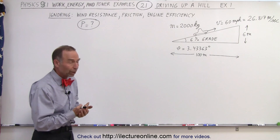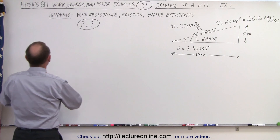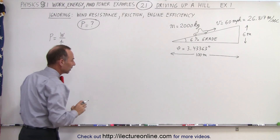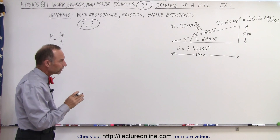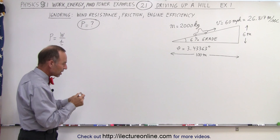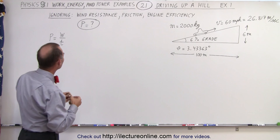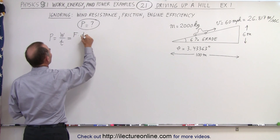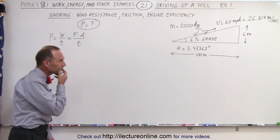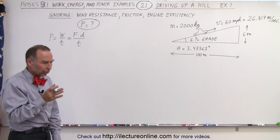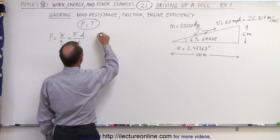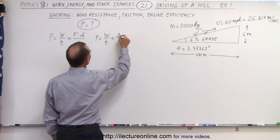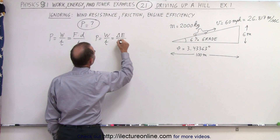How do we do that? We start with the basic definition of power. Power is equal to the work done in a certain amount of time. The work done, by definition, is equal to force times distance — so force times distance divided by time. Another way to think about it: power, which is equal to work divided by time, is also the change in energy divided by time.